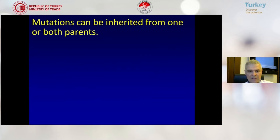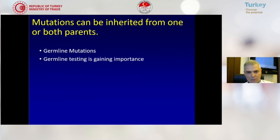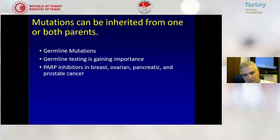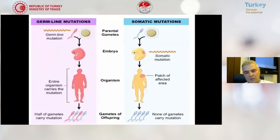Mutations can be inherited from one or both parents — this is called germline mutations. Germline testing is gaining importance. For example, PARP inhibitors: if we detect a germline mutation in the DNA, we can give PARP inhibitors to prostate cancer, pancreatic cancer, or breast cancer.